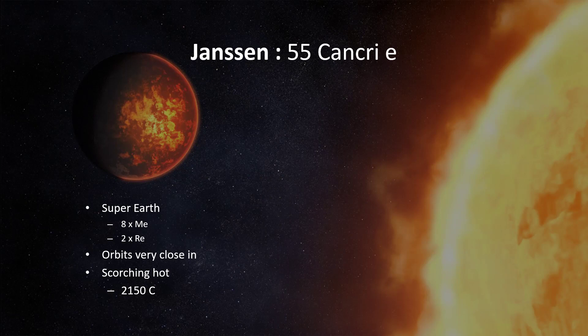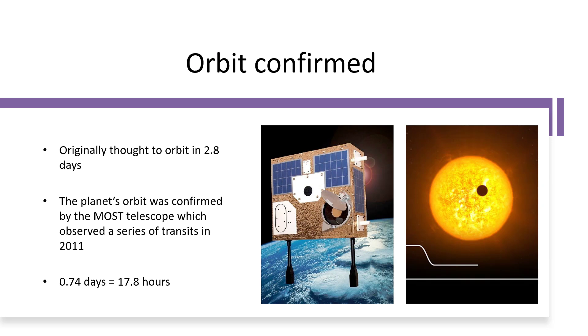Janssen — 55 Cancri e — has eight times the mass of the Earth and double the radius. That gives eight times the volume and eight times the mass, so a density quite similar to Earth's. But it orbits immensely close to the star and is scorching hot on the surface: about 3,000 Kelvin, or 2,150 degrees Celsius, enough to make it glow red. It was initially thought to be in a 2.8-day orbit, but proper analysis and the discovery of transits — where it passes in front of the star, aligned with our line of sight — revealed a very short orbit of just 17.8 hours, three-quarters of a day.